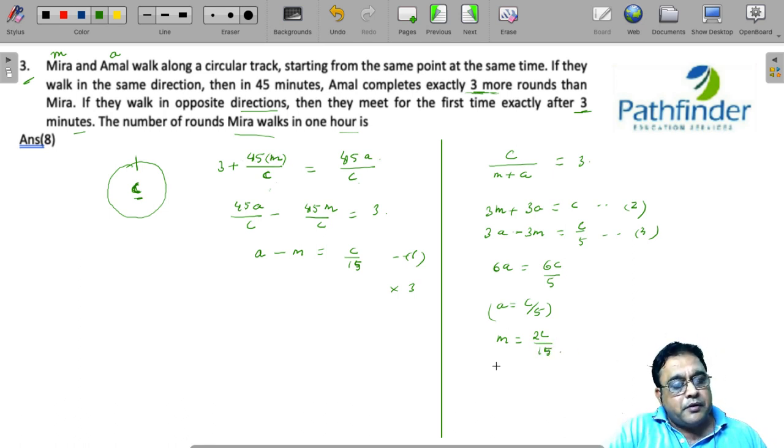If this is the speed, how much time will Meera take to walk one circumference? So, that will be equal to circumference upon the speed. This is the time taken by Meera to complete one circumference or one lap, which is 15 by 2 or 7.5 minutes.